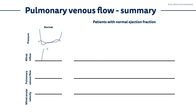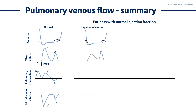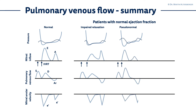How does the mitral valve inflow signal and the pulmonary venous signal look in the echocardiogram? On the left-hand side you can see normal pressures: the normal E to A ratio, the IVRT at the beginning, the pulmonary venous flow signal with the systolic flow and the diastolic flow, and the mitral annular velocity — the E prime and the A prime.